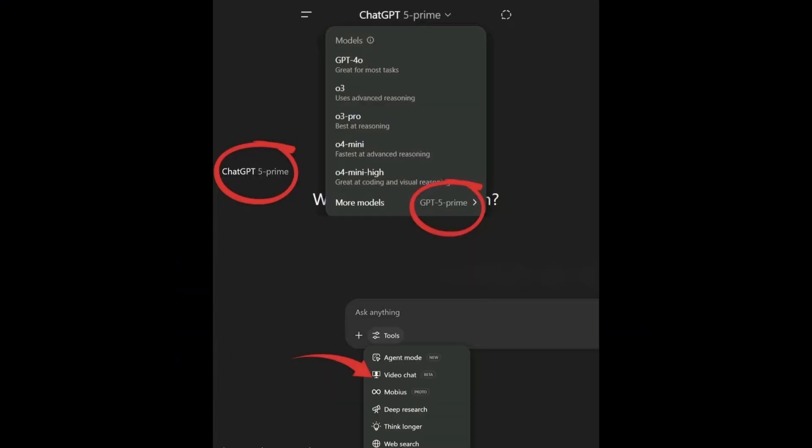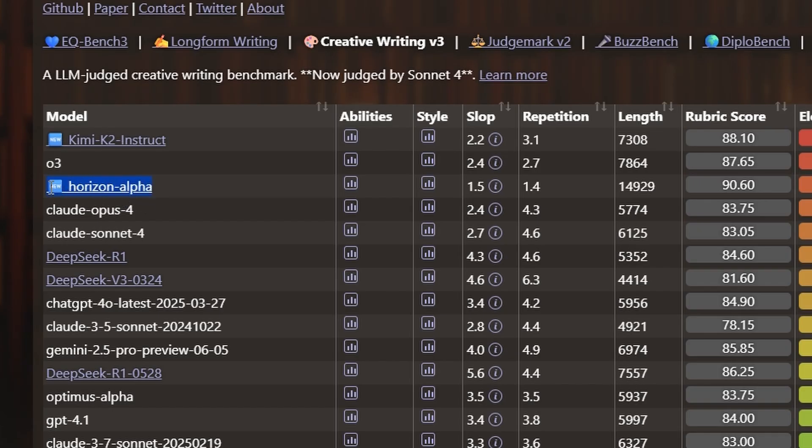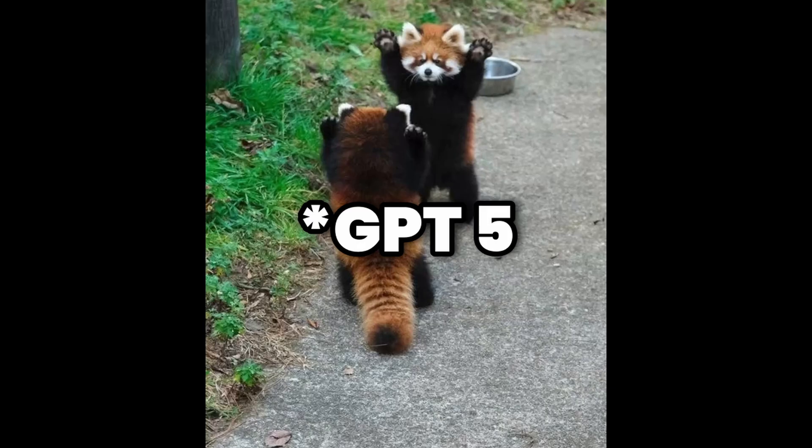So while the internet is getting flooded with photoshopped images of GPT-5, a secret model just got launched on OpenRouter that's been crushing benchmarks so hard people are already calling it GPT-5.